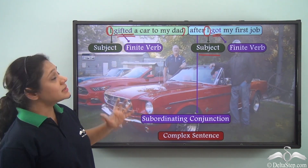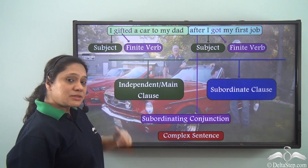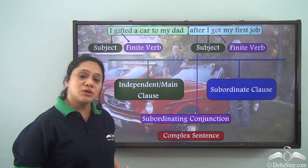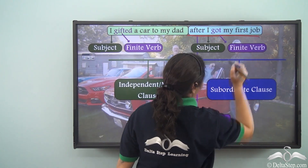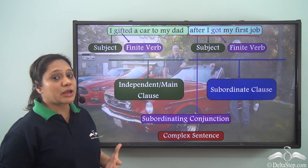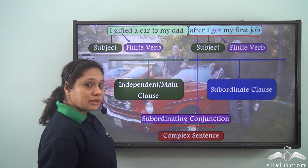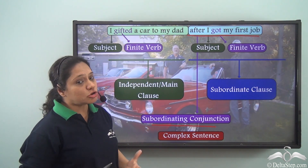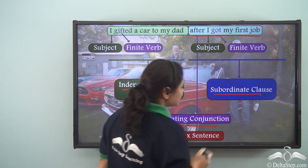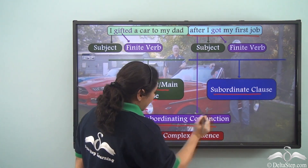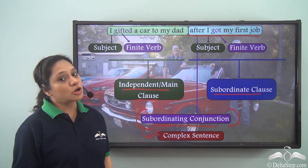The first clause 'I gifted a car to my dad' is an independent clause because it can stand on its own and makes complete sense. Whereas the second clause 'after I got my first job' is a subordinate clause because it cannot stand on its own and also starts with a subordinating conjunction. So this sentence is made up of one independent clause and one subordinate clause joined with a subordinating conjunction — this is a complex sentence.